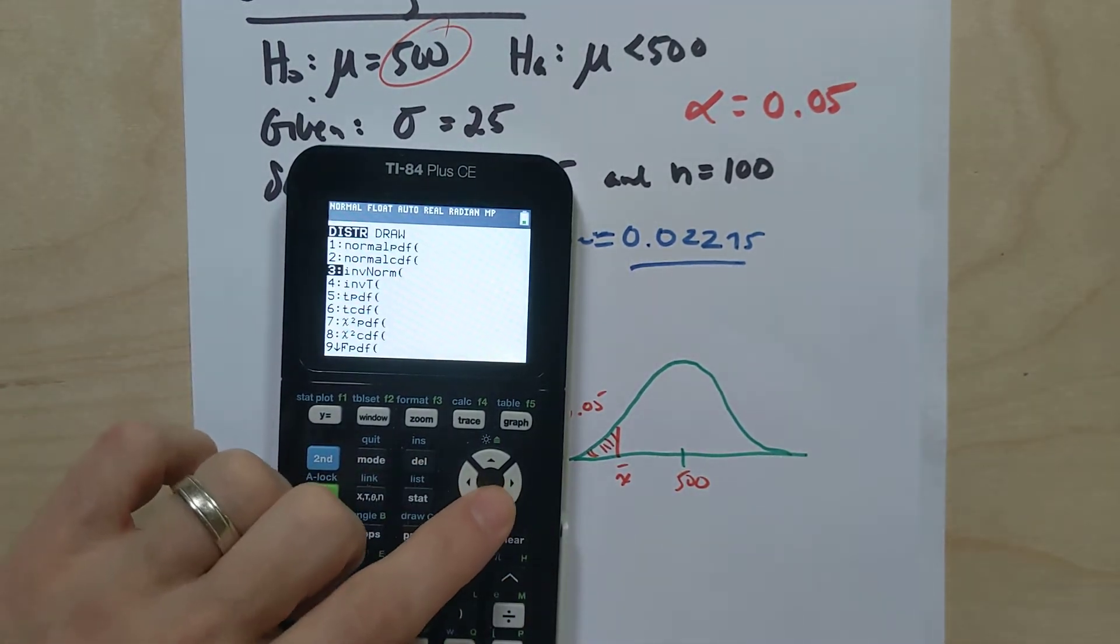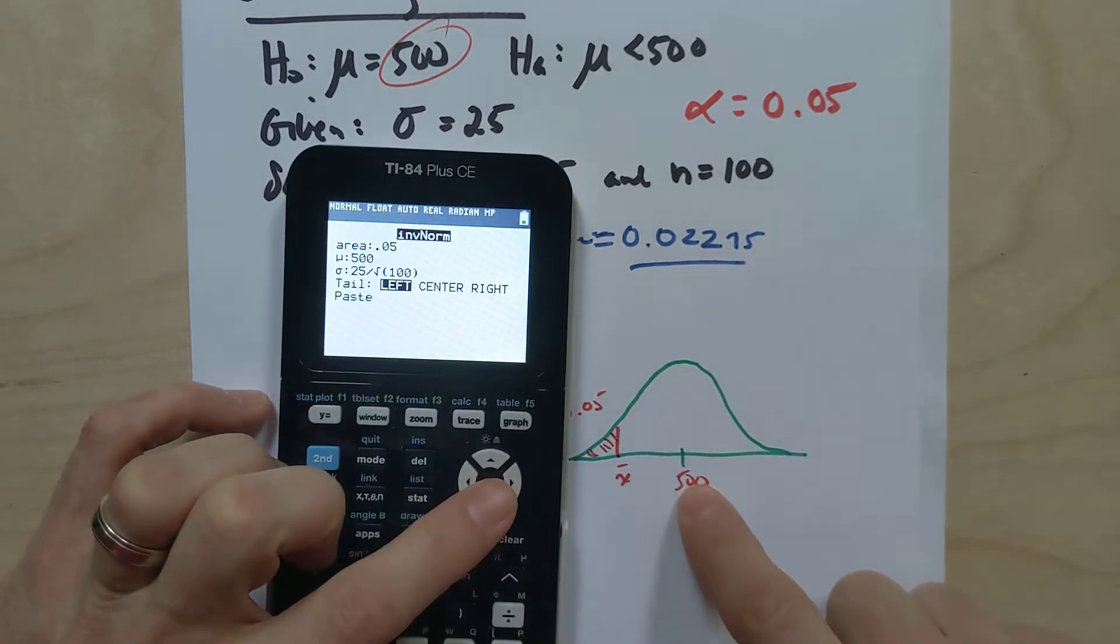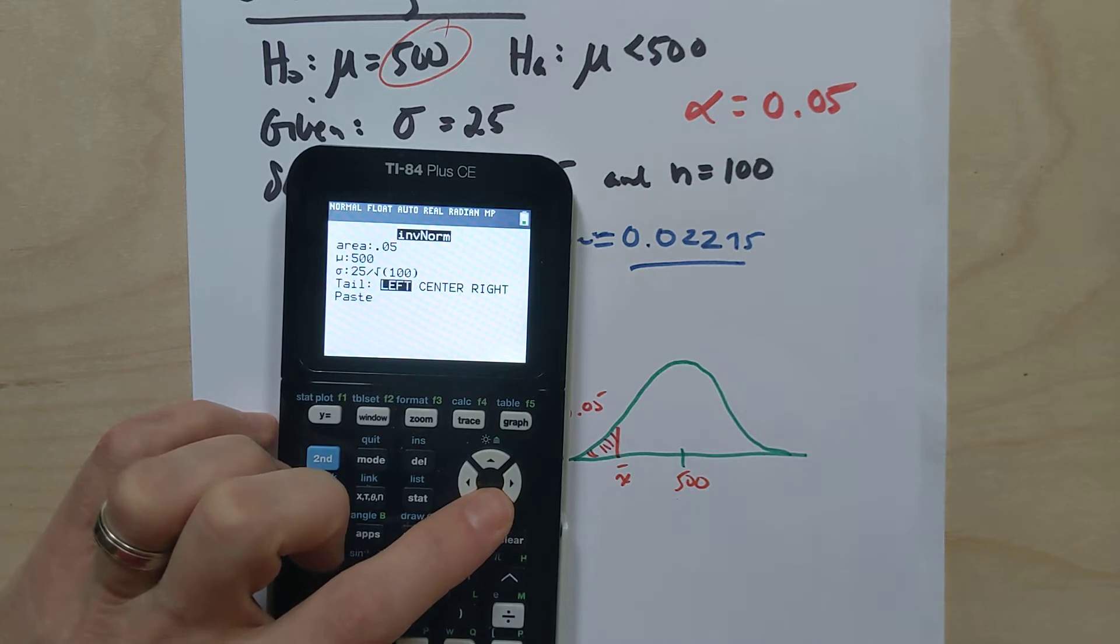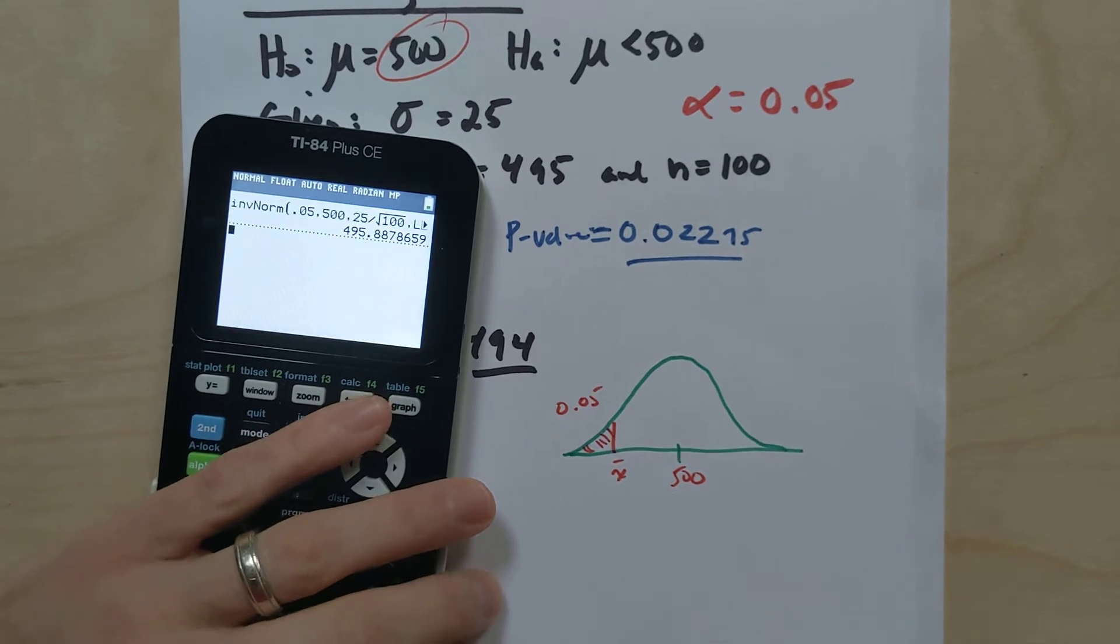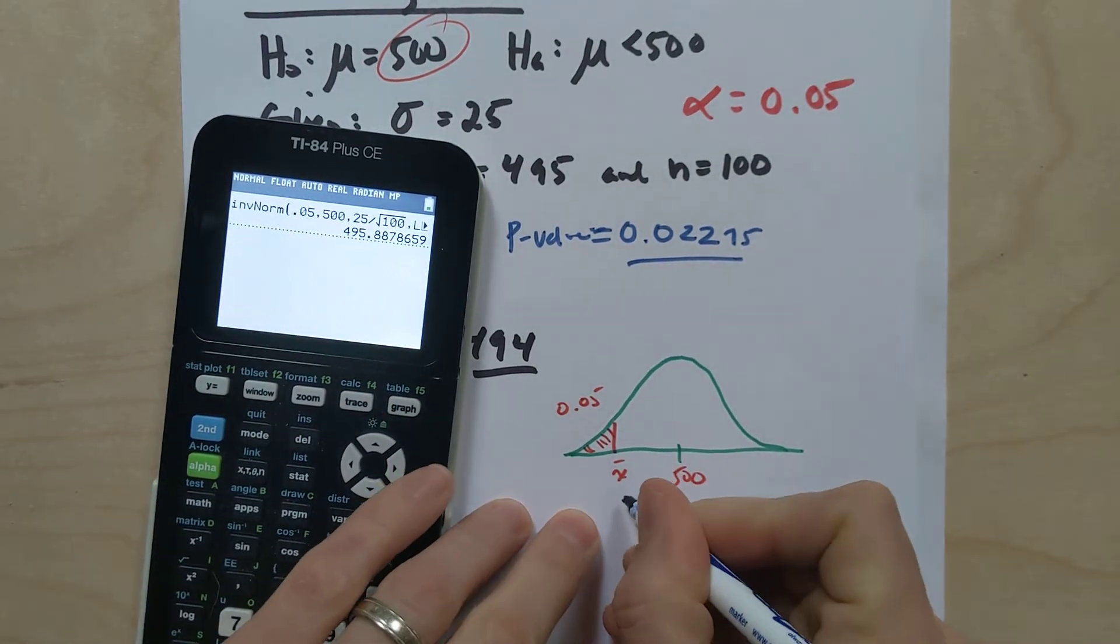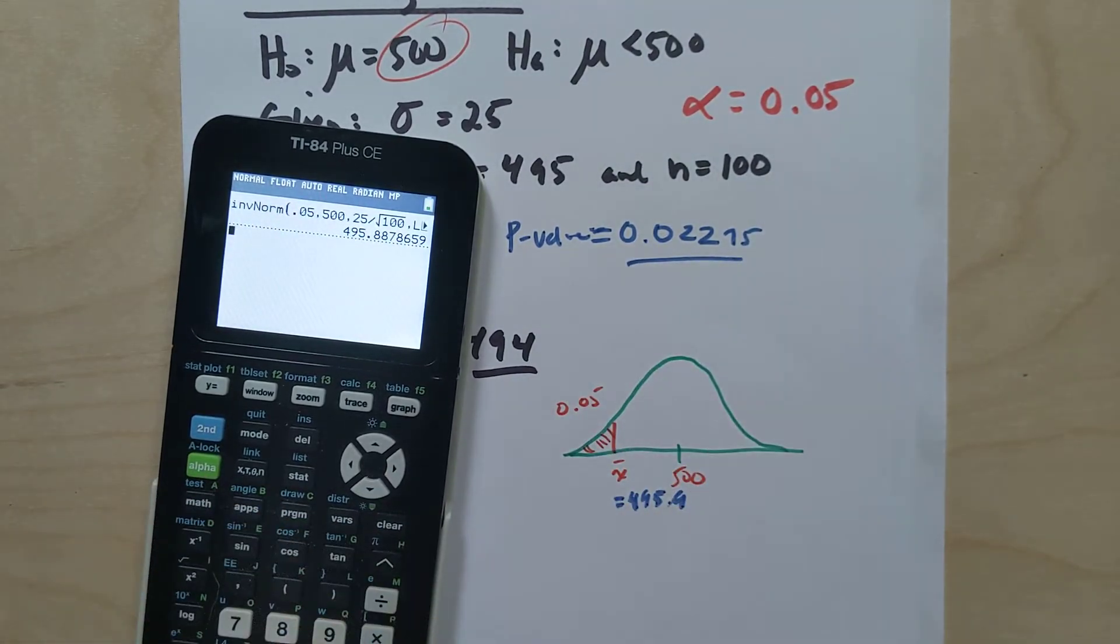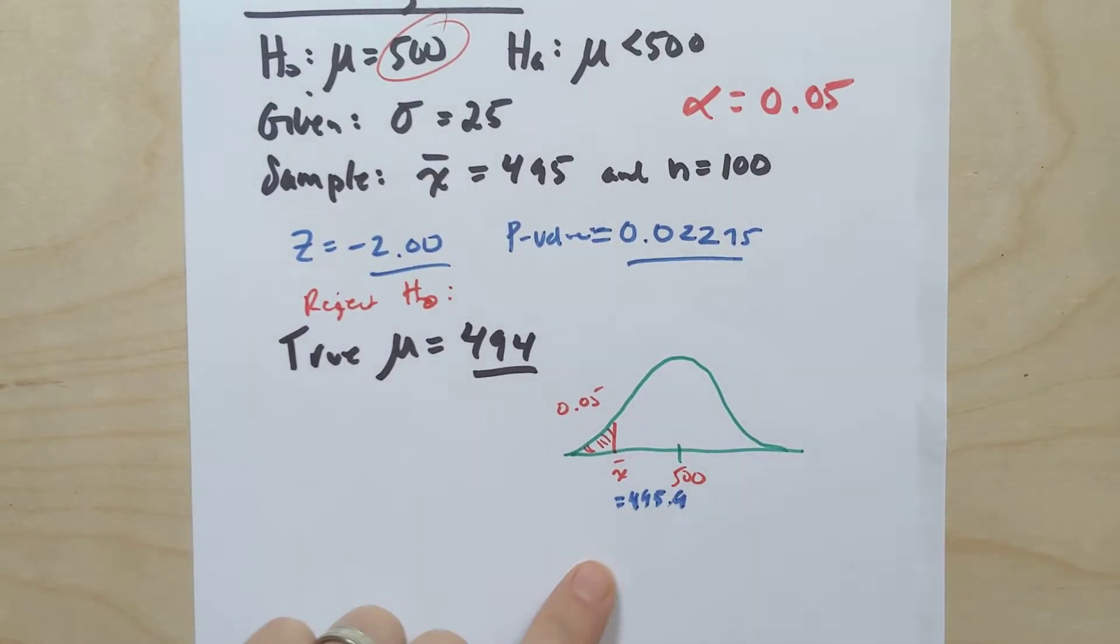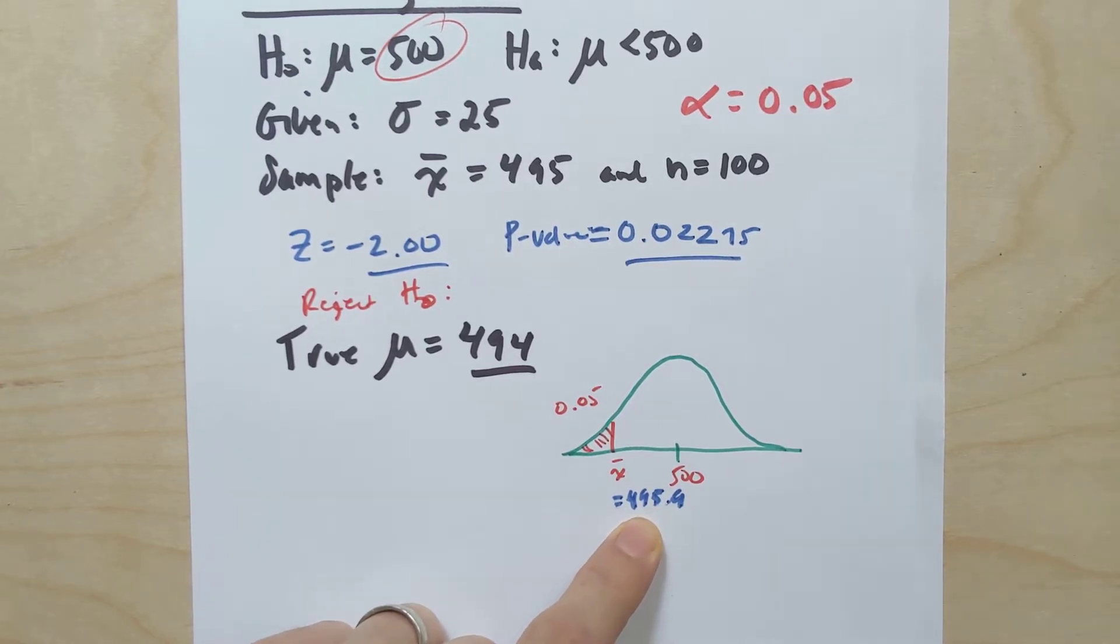So for this, I could use inverse norm. Let's go to inverse norm, and we've got 0.05 for our area to the left. We're going to stick 500, which is the mean of the hypothesized distribution based on the null hypothesis. We've got the standard deviation, 25 divided by root 100, and we get a sample mean of 495.9 approximately, right? And so in this case, it's 495.9.